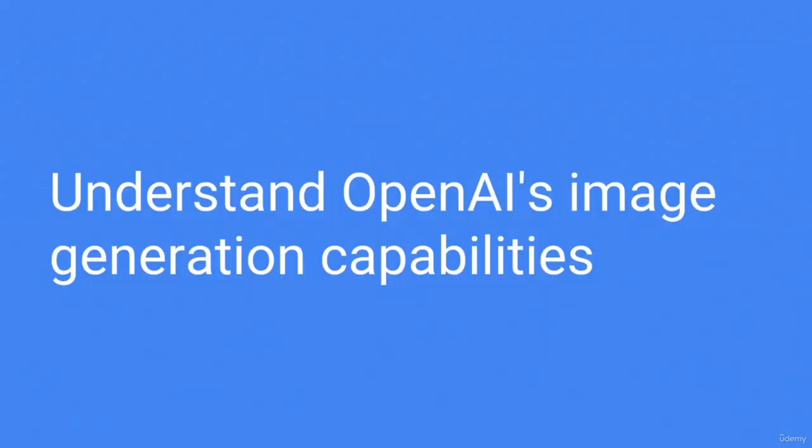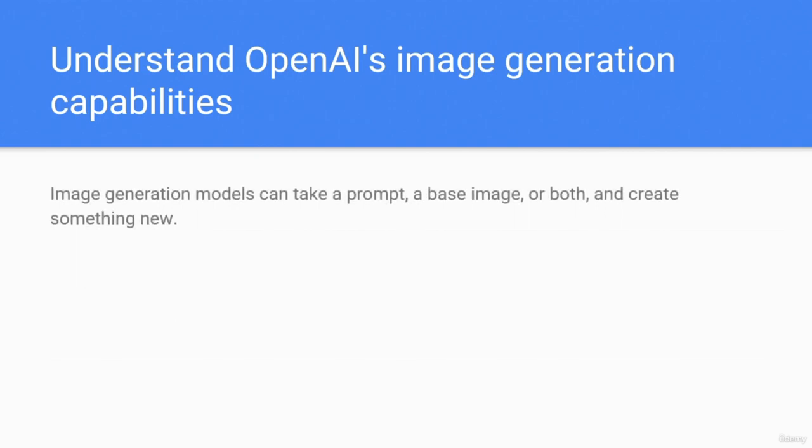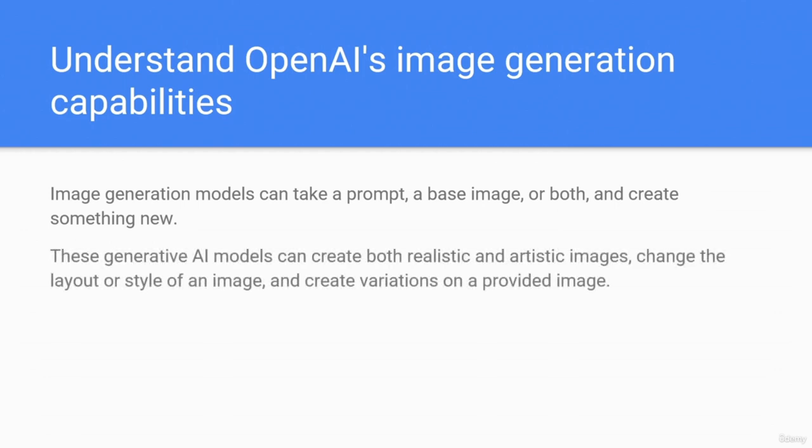Understand OpenAI image generation capabilities. Image generation models can take a prompt, a base image, or both, and create something new. These generative AI models can create both realistic and artistic images, change the layout or style of an image, and create variations on a provided image.